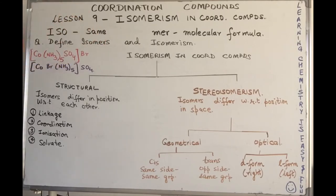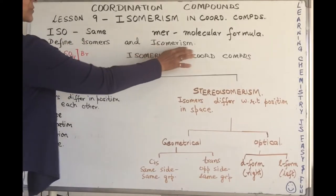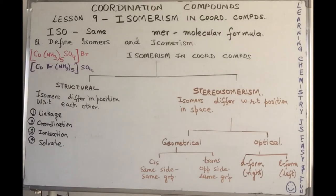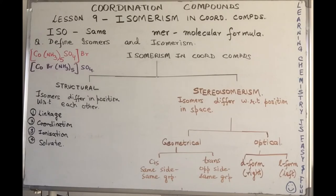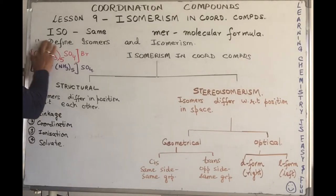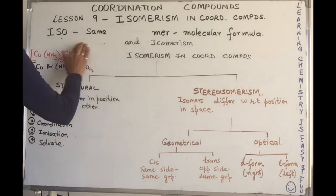Due to the difference in the arrangement of atoms in them, they are called isomers and the phenomenon is known as isomerism. Now if you notice I've not written the definition on the board, so the question is to define isomers and isomerism so that your notes are ready for offline reference as well.